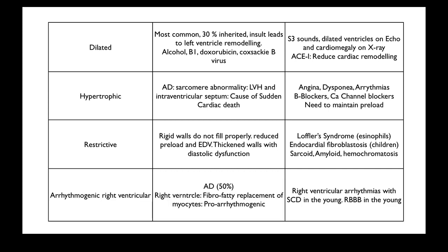Finally, arrhythmogenic right ventricular cardiomyopathy (ARVC) is autosomal dominant and is a very common cause of sudden cardiac death in the young. This is when the right ventricle develops fibro-fatty replacement of the myocytes. Myocytes are important in that they have not been shown to divide or replicate, so once they die, you get scarring. In ARVC, fibro-fatty replacement of myocytes is maladaptive and pro-arrhythmogenic. On echo, you'll see a hypokinetic right ventricular wall, as the fatty deposits have no contractility. This makes patients at risk of ventricular arrhythmias such as VT and VF, and a high risk of sudden cardiac death.